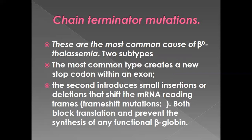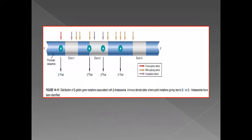Chain terminator mutations are the most common type of beta-zero thalassemia. The most common creates a new stop codon within an exon; the second introduces small insertions or deletions that shift the messenger RNA reading frames — those are frameshift mutations. These are the different types of mutations present in thalassemia, including transcription defects and RNA splicing or translation defects.